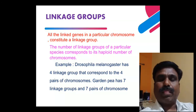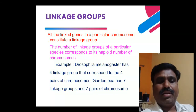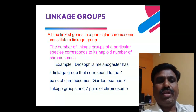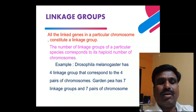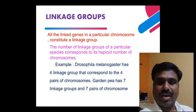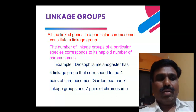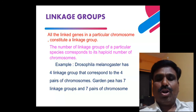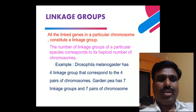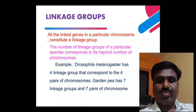The number of linkage groups of a particular species corresponds to the haploid number of chromosomes. For example, Drosophila melanogaster — a model organism used in research — has four linkage groups corresponding to four pairs of chromosomes.